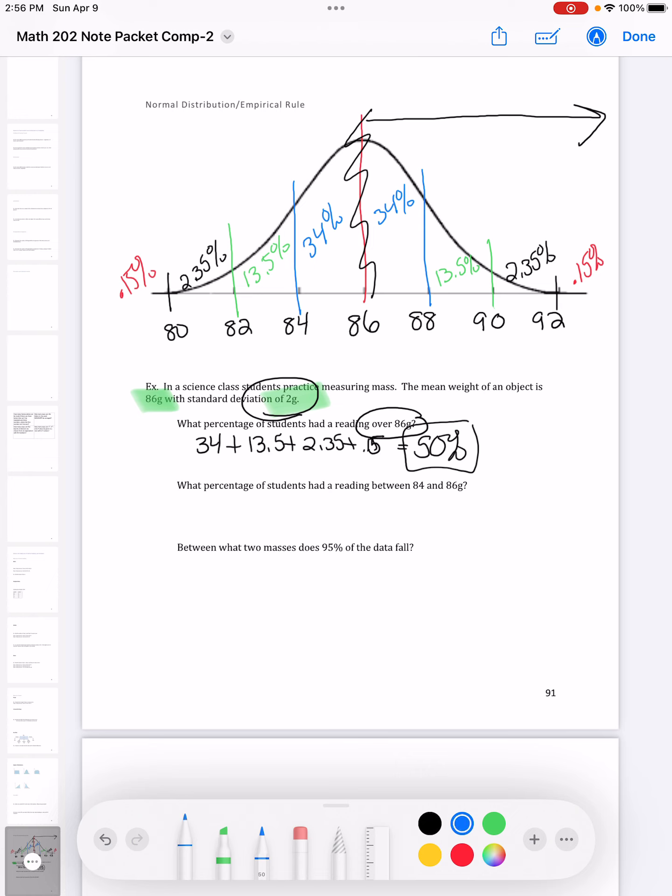For the second one, it was a reading between 84 and 86%. So there's nothing to add there. It is just straight 34%.